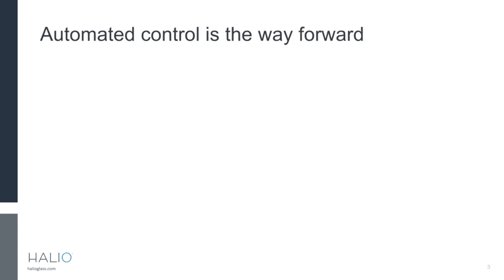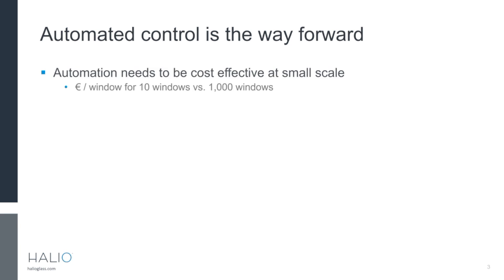So the answer is automated controls for our shading systems. That's becoming much more common on large, high-spec buildings, but smaller buildings and residences are still left out of automation. Part of the reason is that automation needs to be cost-effective at that scale. System costs — like centralized control hardware, commissioning, sensors on the roof — might be absorbed easily by a building with 1,000 windows, but a building with 10 windows can't absorb those costs.